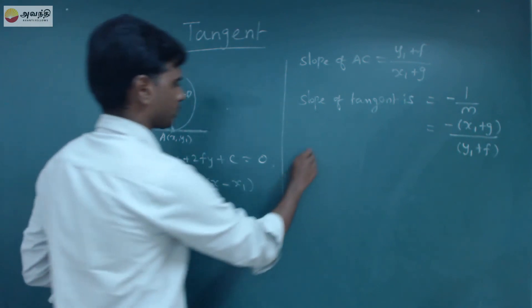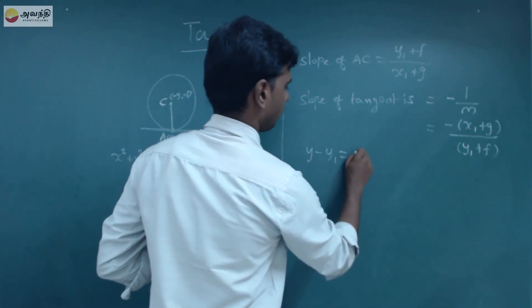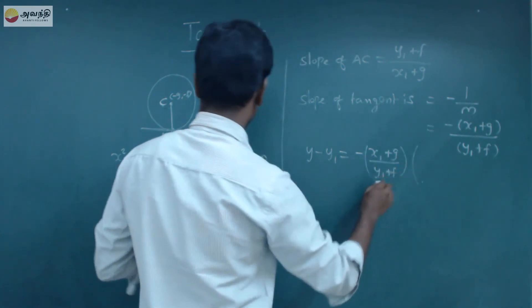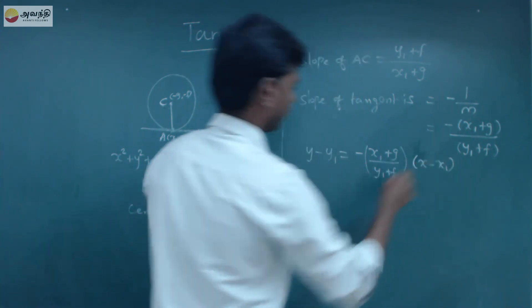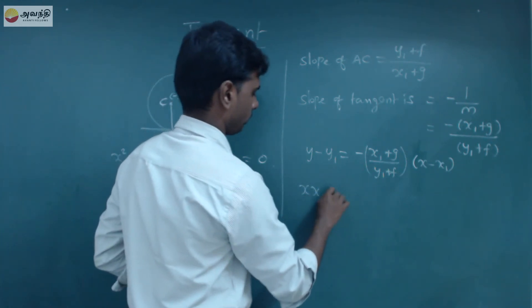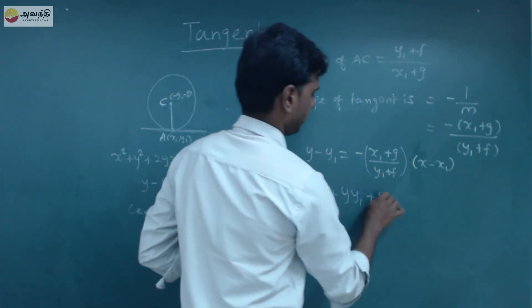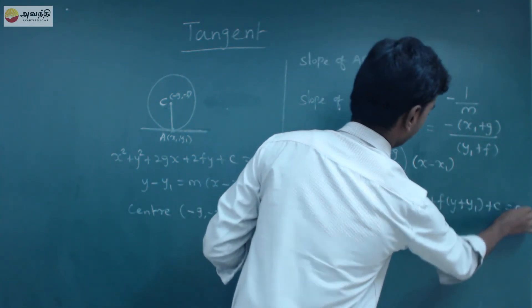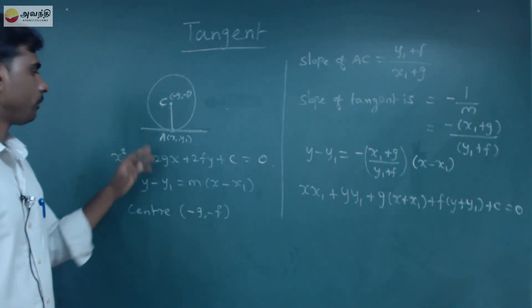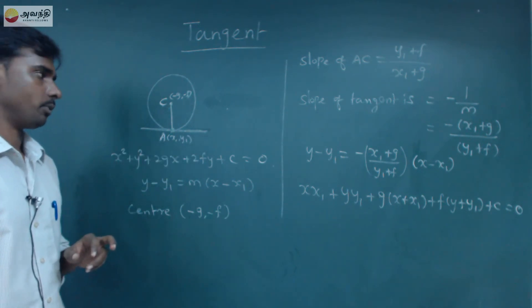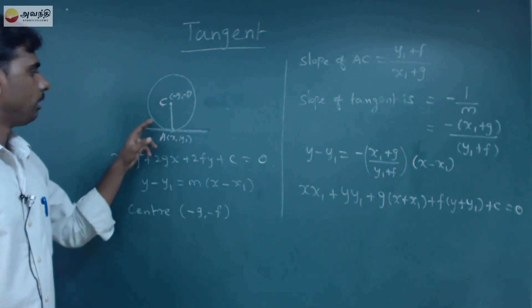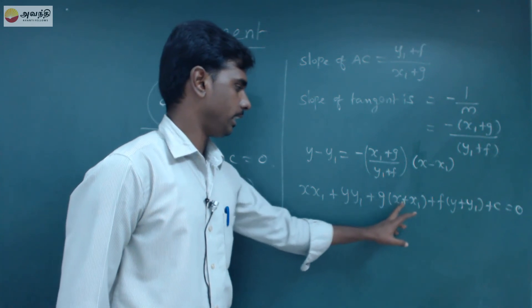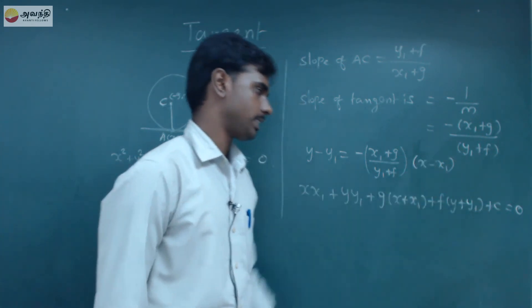We are going to substitute. So substitute: y − y1 = [(x1 + g) / (y1 + f)] × (x − x1). After cross multiplication and solving, we get: xx1 + yy1 + g(x + x1) + f(y + y1) + c = 0. That's the tangent equation. The center is (−g, −f).